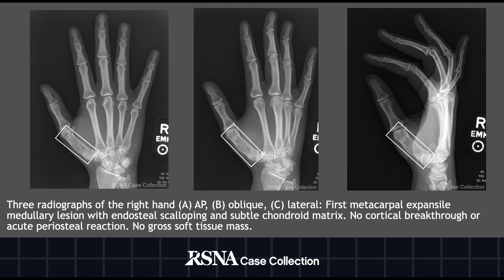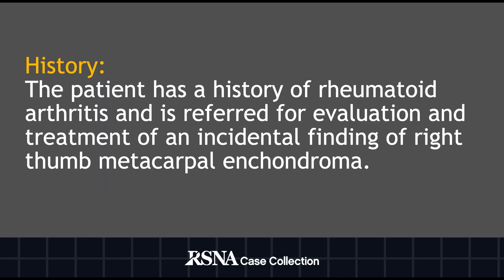On this slide, we have three radiographs of the patient's right hand in AP, oblique, and lateral projections, showing an expansile medullary lesion throughout the first metacarpal with chondroid matrix causing endosteal scalloping. There's no cortical break or acute periosteal reaction, and no gross soft tissue mass. The patient has a history of rheumatoid arthritis and is referred for evaluation and treatment of an incidental finding of right thumb metacarpal enchondroma.